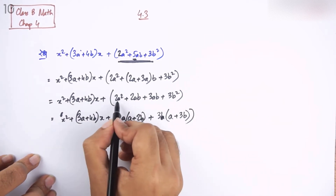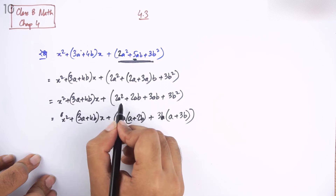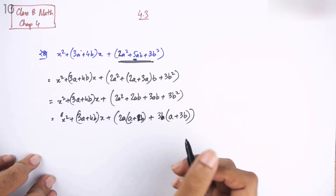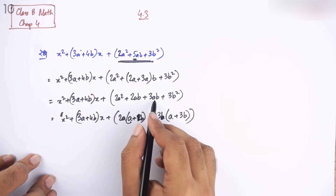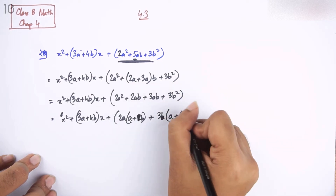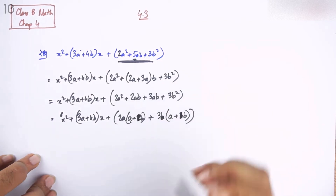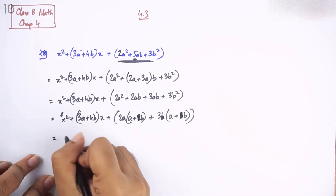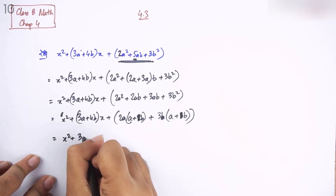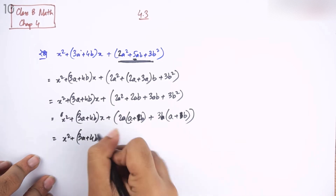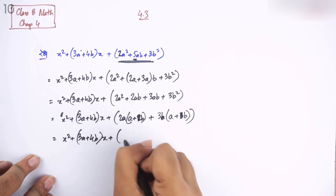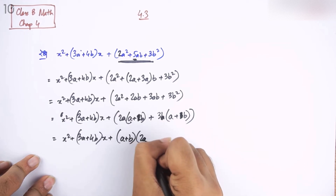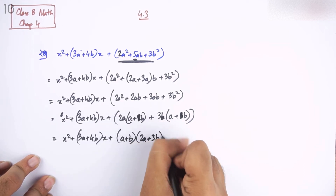Look, twice a is common. I don't think twice a is common; twice b is common, and thrice b is common. So I'll write the double x squared plus thrice a plus 4b, then x plus a plus b, into twice a plus thrice b.